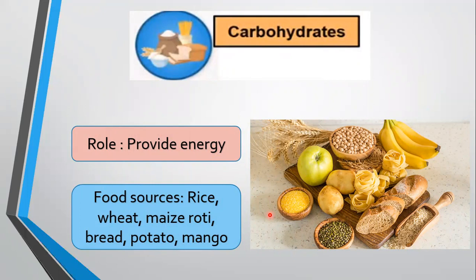Starch is a complex carbohydrate and the energy from starch is released more slowly. Cellulose is also a complex carbohydrate. It is very tough, which is why plants are often difficult to chew. Cooking softens the cellulose and makes plant matter edible.